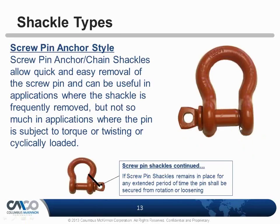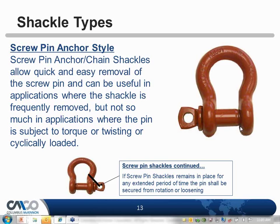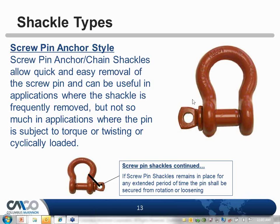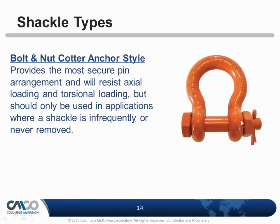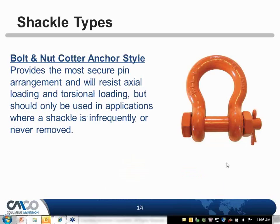When do we use a screw pin anchor shackle? It's for easy removal — it's the rigger's favorite. You don't have to have any tools with you out in the field. It does have a hole in the pin head for a spanner wrench so you can undo the pin if it gets locked up. Where it's going to be a semi-permanent connection, we want to move to the bolt nut cotter type. You must have that cotter pin in place to prevent the bolt from backing off.